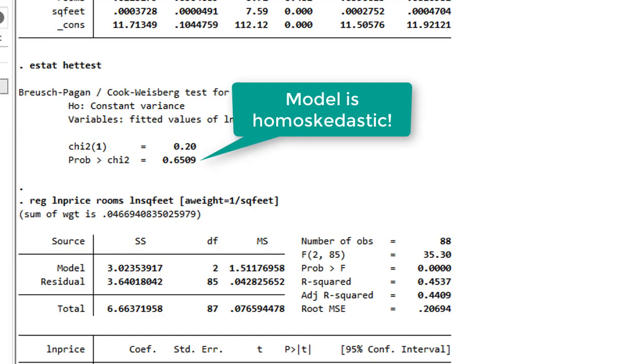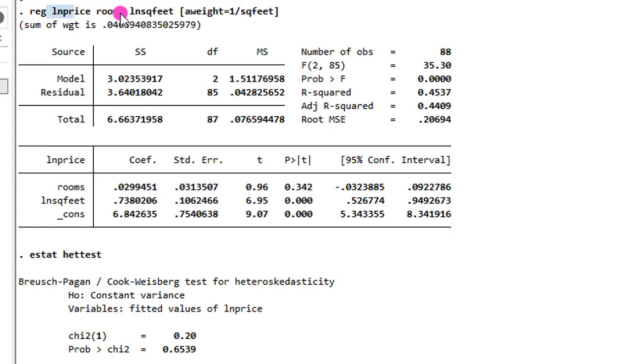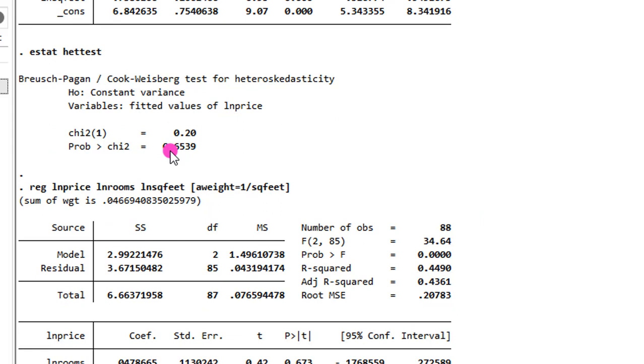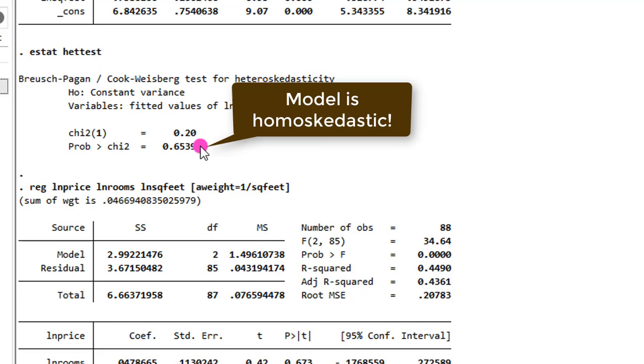And let's take a look at the third one, what I call my log level log model, where I have the log of price and the log of square feet, but the level of rooms. Our interest again is on the outcome of the test. The p-value is 0.6539. So again, the problem of heteroskedasticity has been corrected using the weighted least squares or the GLS approach and also by transforming the variables using a functional form.